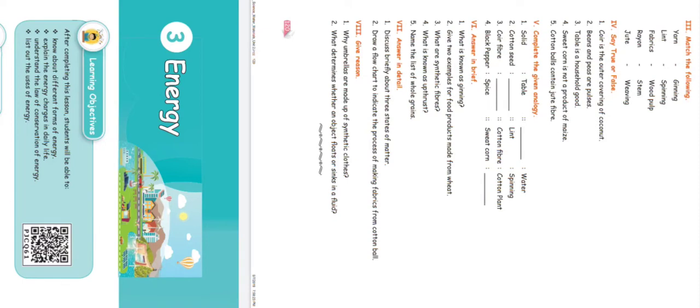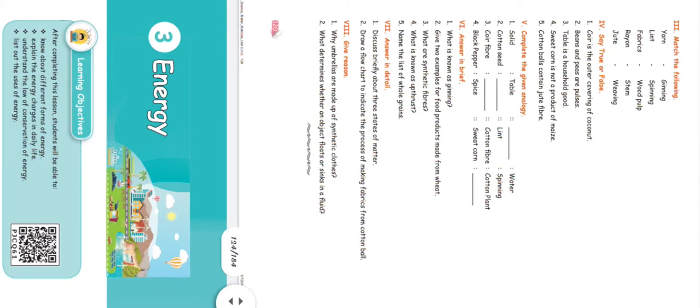Say true or false. Coir is the outer covering of the coconut — True. Beans and peas are pulses — False. Table is a household good — True. Sweet corn is not a product of maize — False. Cotton balls contain jute fiber — False.